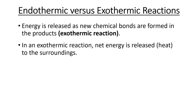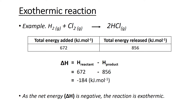In an exothermic reaction, energy is released into the surroundings as new chemical bonds are formed in the products. For example, hydrogen reacts with chlorine to give hydrogen chloride. 672 kilojoules of energy is required to break those bonds, and 856 kilojoules per mole of energy is released when new bonds form in the products. So the enthalpy change is 672 minus 856, giving a value of negative 184 kilojoules per mole. As the net energy is negative, this reaction is exothermic.